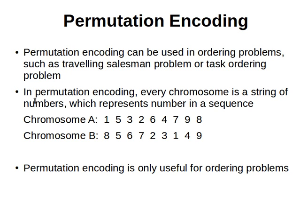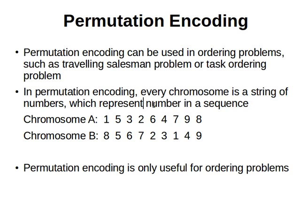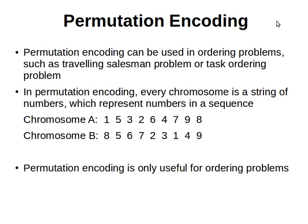In permutation encoding, every chromosome is a string of numbers representing a sequence. Every string represents numbers in a sequence — for example, one chromosome might be 1, 5, 3, 2, 6, and another might be 8, 5, and so on.